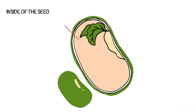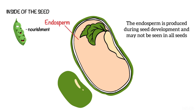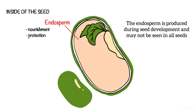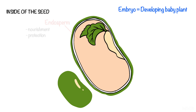Moving on to the inside of the seed, we have the endosperm which provides nourishment to the developing embryo. It can also provide physical protection by covering the developing baby plant.